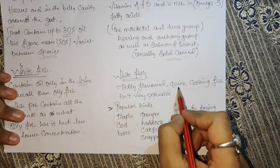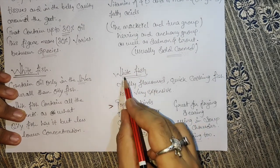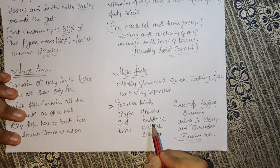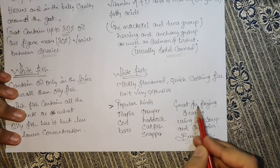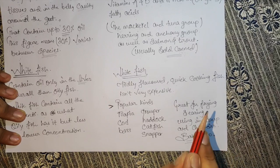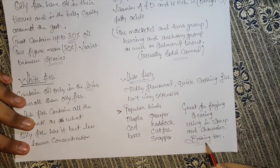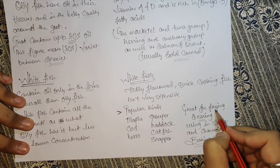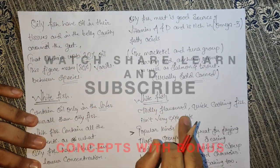White fish are mildly flavoured and quick-cooking fish, and are not very expensive. Popular kinds of white fish include cod, bass, grouper, haddock, catfish, and snapper. They are great for frying, searing, using in soups and chowders, and also baking. Because white fish do not have high oil content, their cooking methods differ — you can deep fry, sear, or bake them.